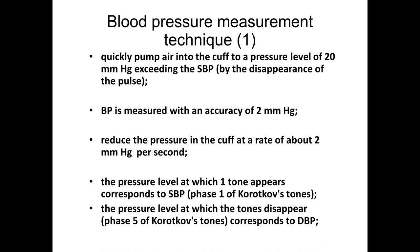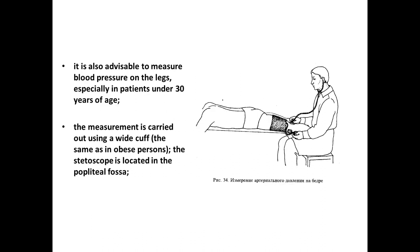Blood pressure measurement technique: pump air into the cuff to a pressure level of 20 mmHg exceeding the systolic blood pressure. BP is measured with an accuracy of 2 mmHg. Reduce the pressure in the cuff at a rate of about 2 mmHg per second. The pressure level at which the first tone appears corresponds to systolic blood pressure. The level at which tones disappear is recognized as diastolic BP. It is also possible to measure blood pressure on the leg, especially in patients under 30 years old, using a large BP cuff with the stethoscope placed in the popliteal fossa.